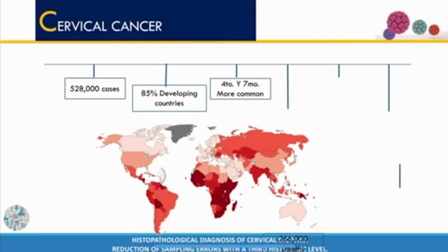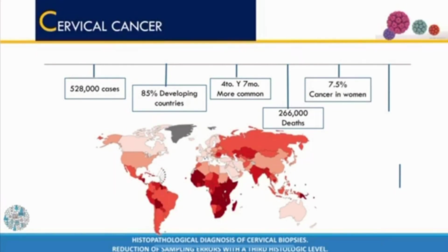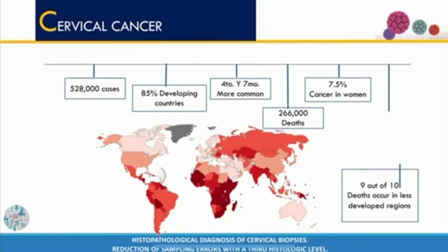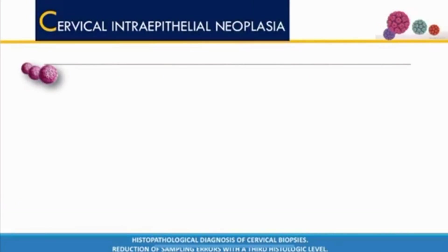For the same year, 266,000 deaths were reported, which represents 7.5 percent of cancer deaths in women. Nine out of ten deaths occur in less developed regions, which represent 87 percent. The main agent for the development of this pathology is HPV, which is inserted into the cervix.